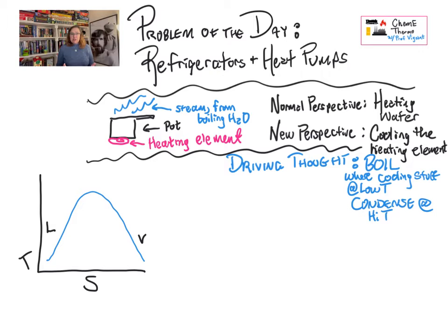So for a refrigeration system, we start at what I'm going to call point one. And at point one, we have 100% saturated vapor. And the saturated vapor is at a low temperature, which means it's also at a low pressure. And what we're going to do here to move from one to two is we are going to compress this vapor.